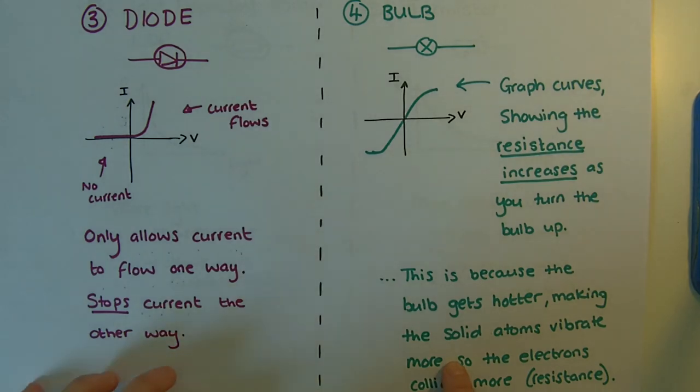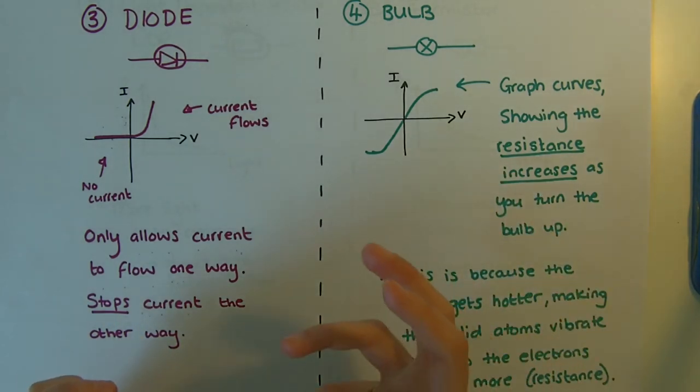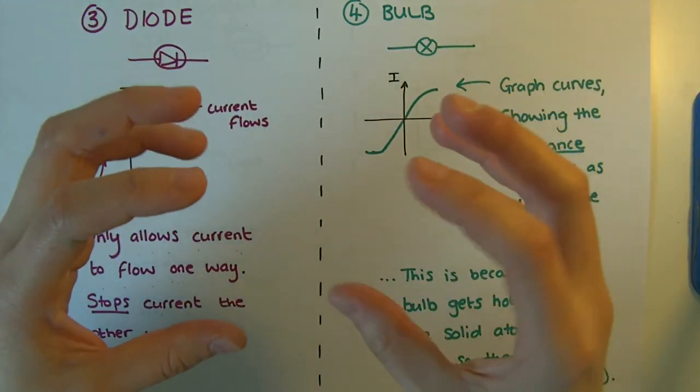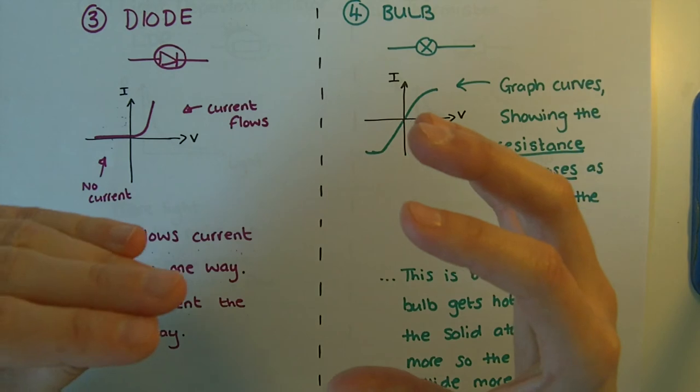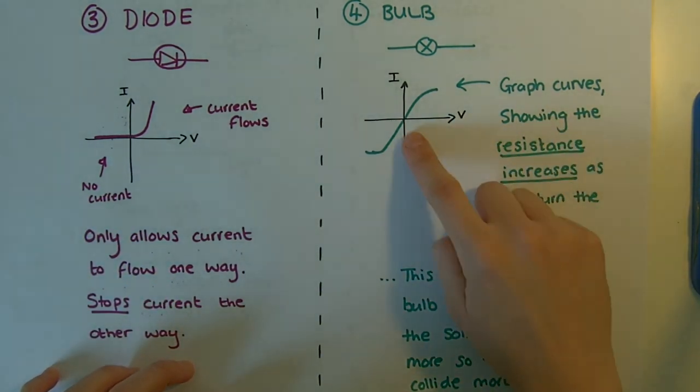Slightly higher tier, harder part here. The reason this happens is because as you turn the bulb up, it also gets hotter. Those atoms that make up the wire are going to start vibrating, which means the electrons will collide with them more. So we've got more resistance.